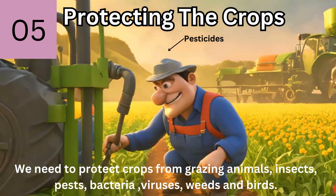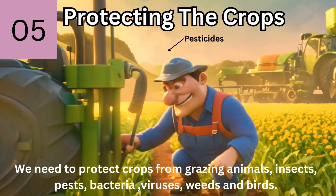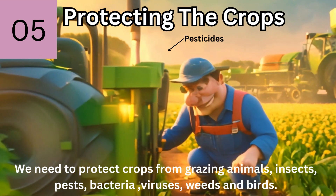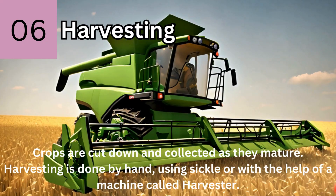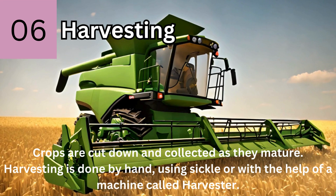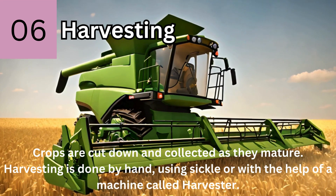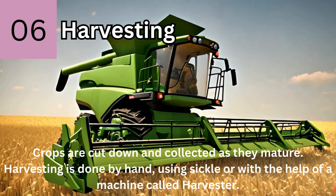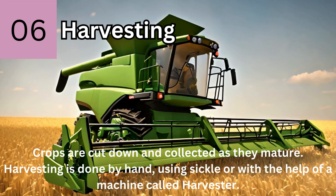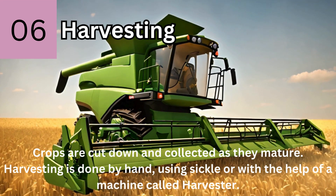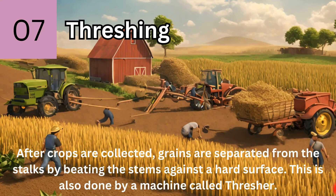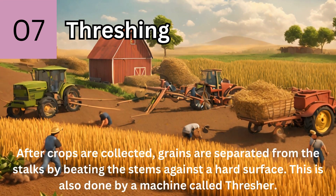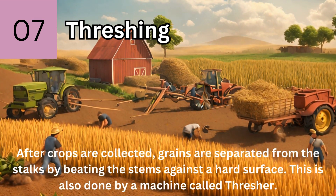We need to protect crops from grazing animals, insects, pests, bacteria, viruses, weeds, and birds. Crops are cut down and collected as they mature. Harvesting is done by hand using a sickle or with the help of a machine called a harvester.